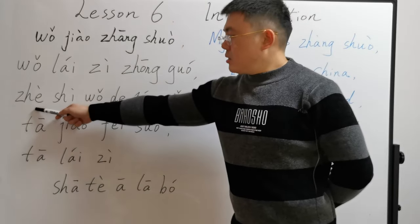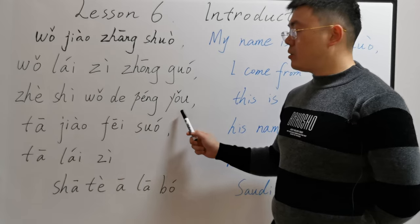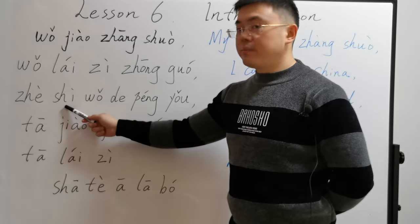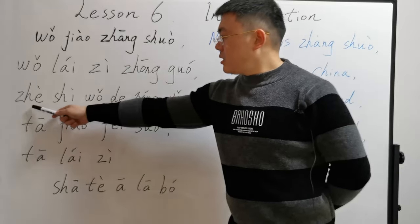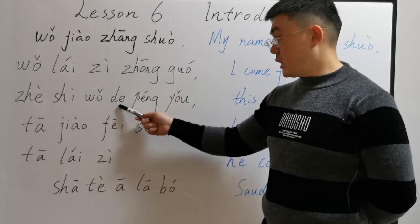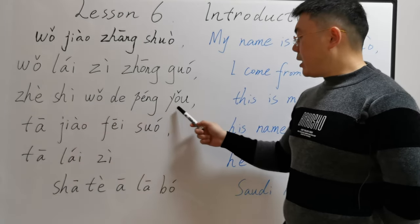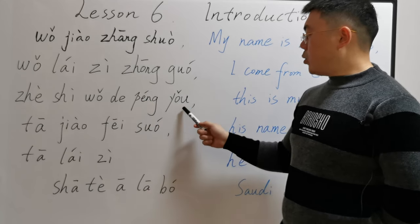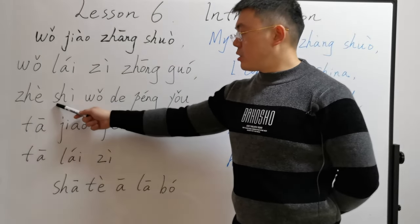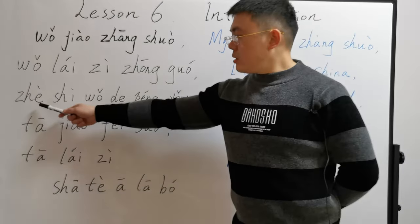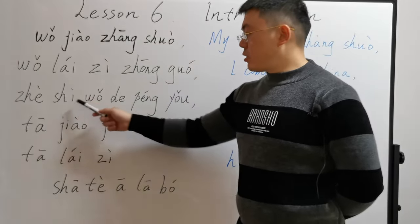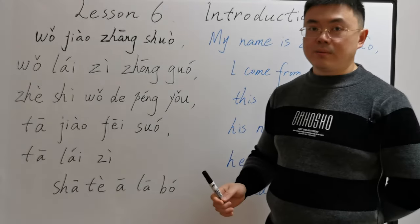Next: 这是我的朋友. 这 is the fourth tone. 这是 means this is. 我 means I, 的 is the neutral tone, so 我的 means my. 朋友 — 朋 is the second tone, 友 is the third tone — means friend. 这是我的朋友 means this is my friend.